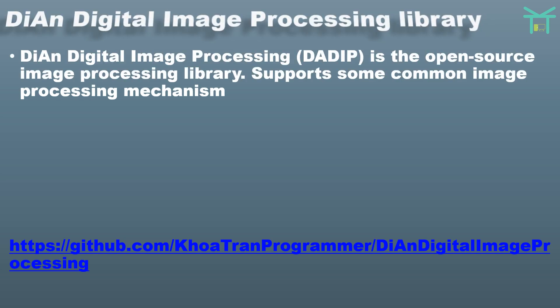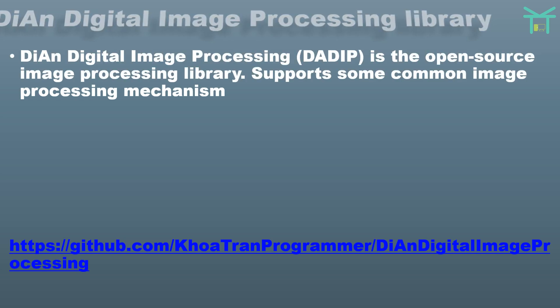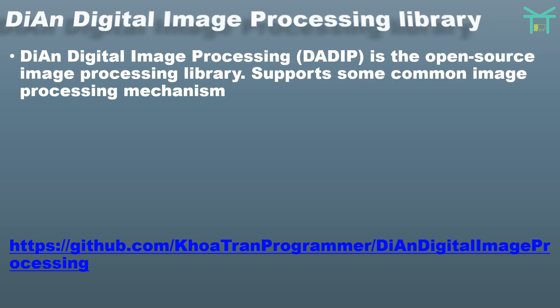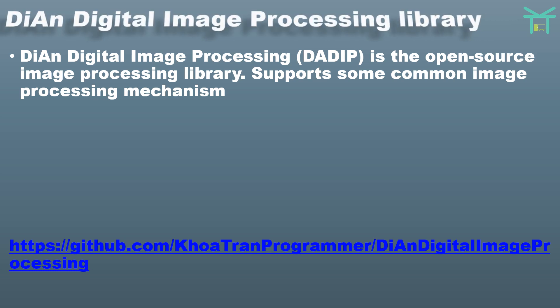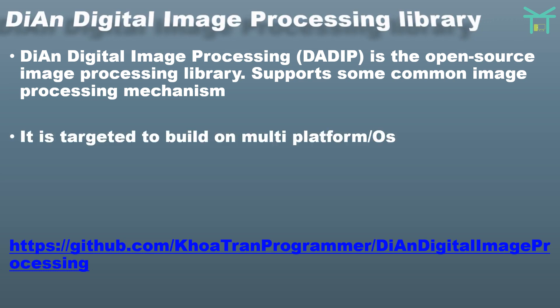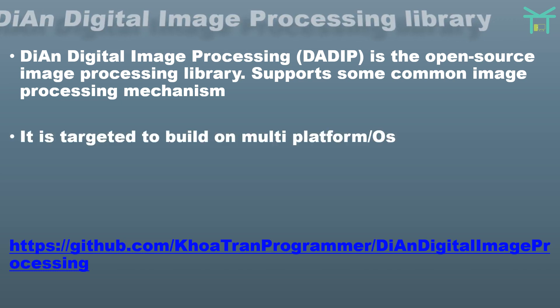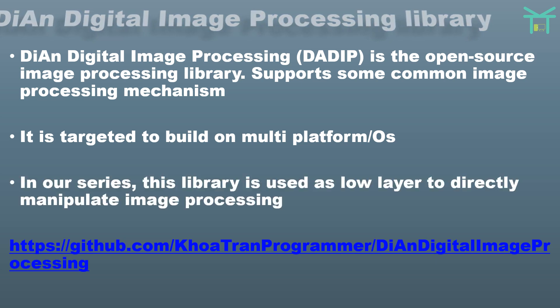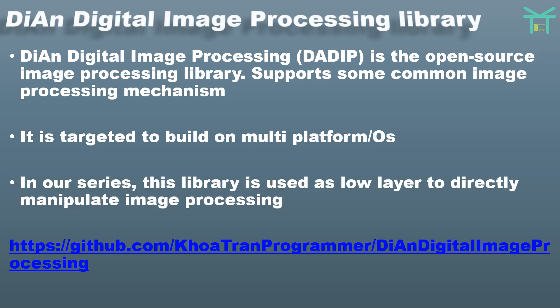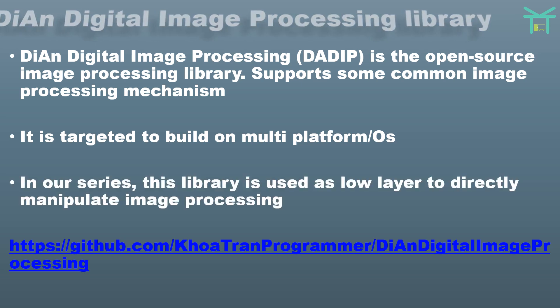The DADIP digital image processing library is an open source image processing library that supports some common image processing mechanisms. It is targeted to build on multi-platform operating systems. In our series, this library is used as a low layer to directly manipulate image processing.